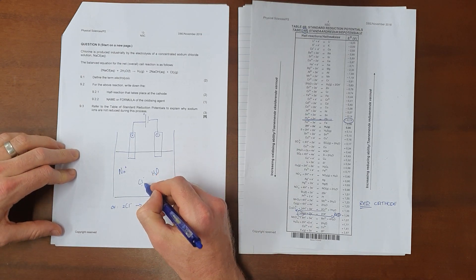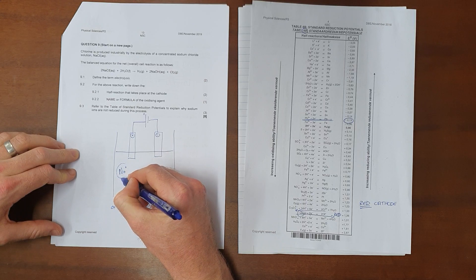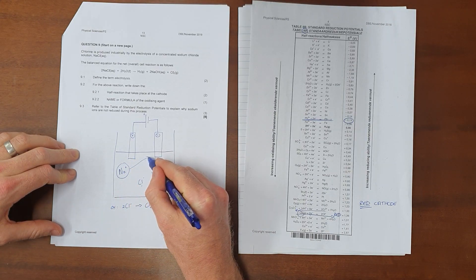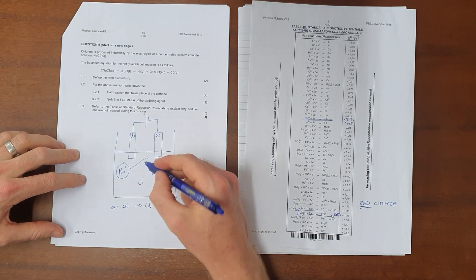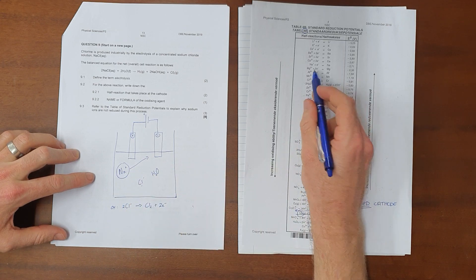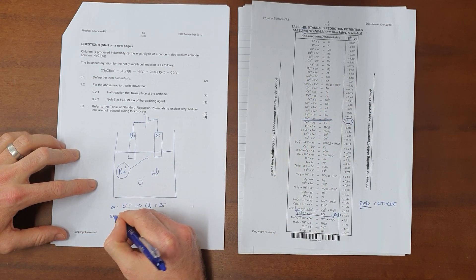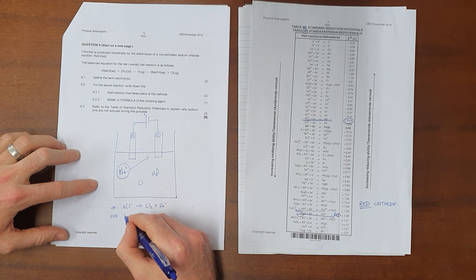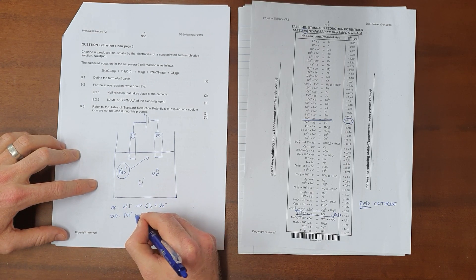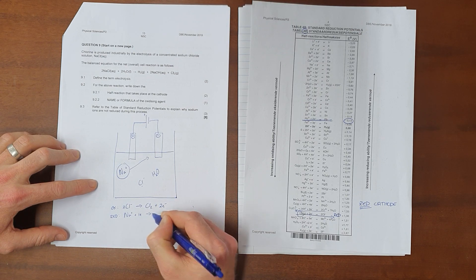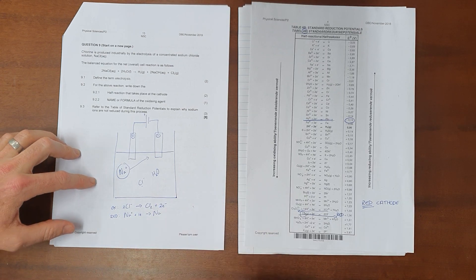That then leaves the possibility for our sodium ions, which we know are going to be attracted to the negative terminal. Those sodium ions can potentially undergo reduction. This is a possible reduction half reaction, where we have a sodium ion that is positively charged that gains a single electron to become sodium solid.